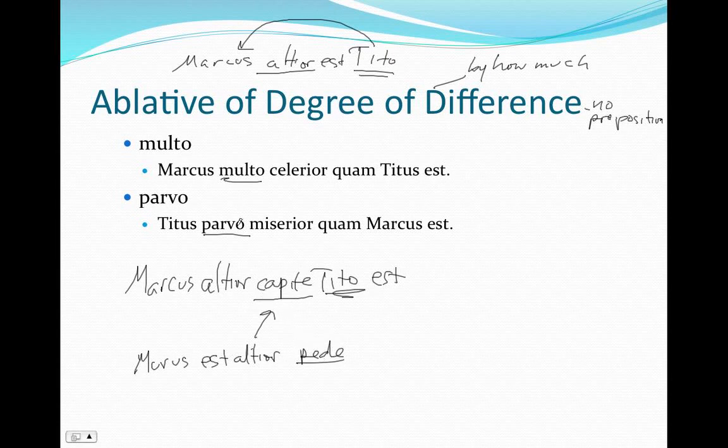So head, foot, parvo, molto. By far though, the two most common are going to be molto and parvo. We'll translate those literally as he's swifter by much, but we just say he's much swifter. He's more wretched by a little, he's a little more wretched. So parvo means a little, molto means much.